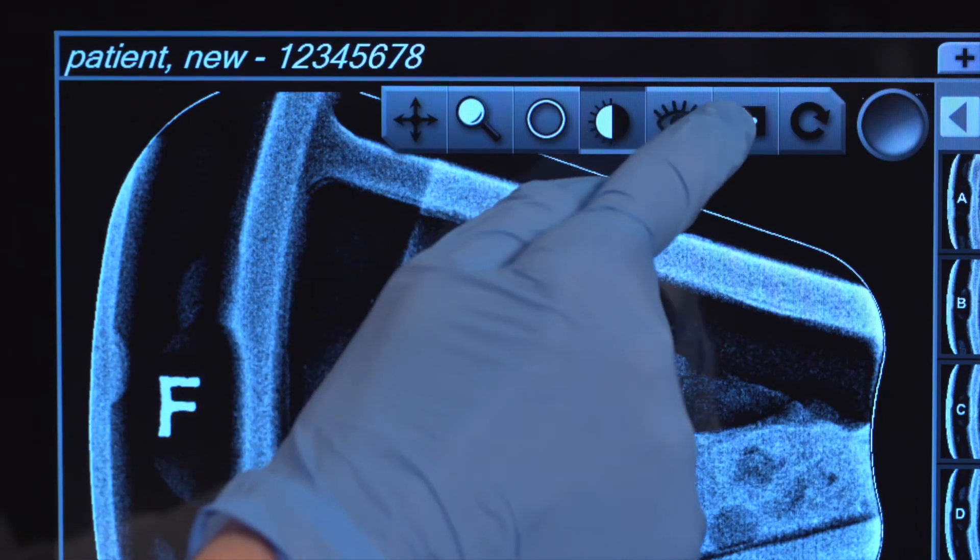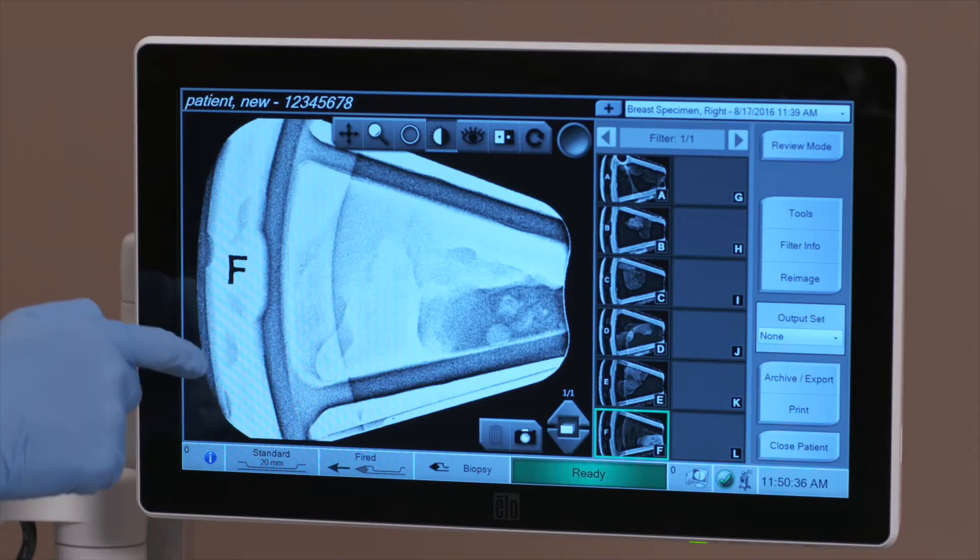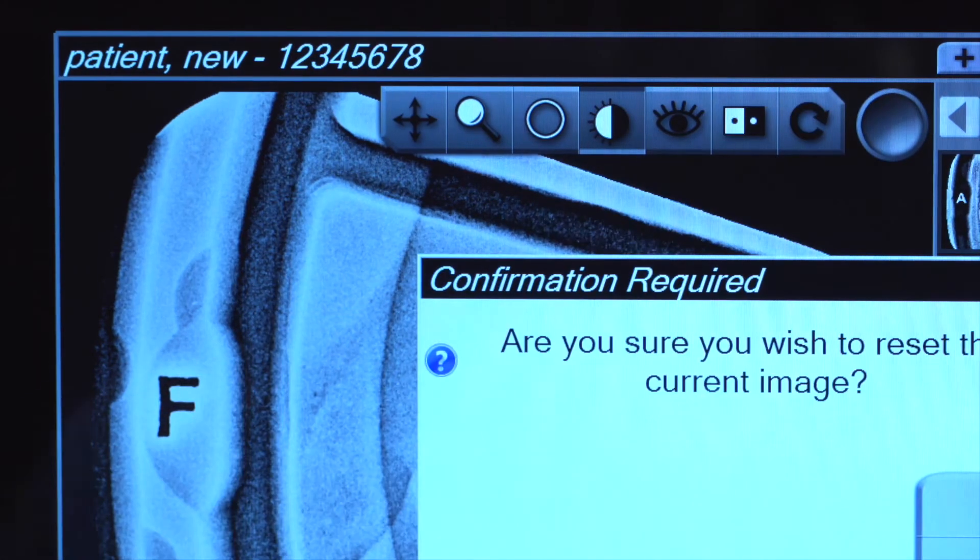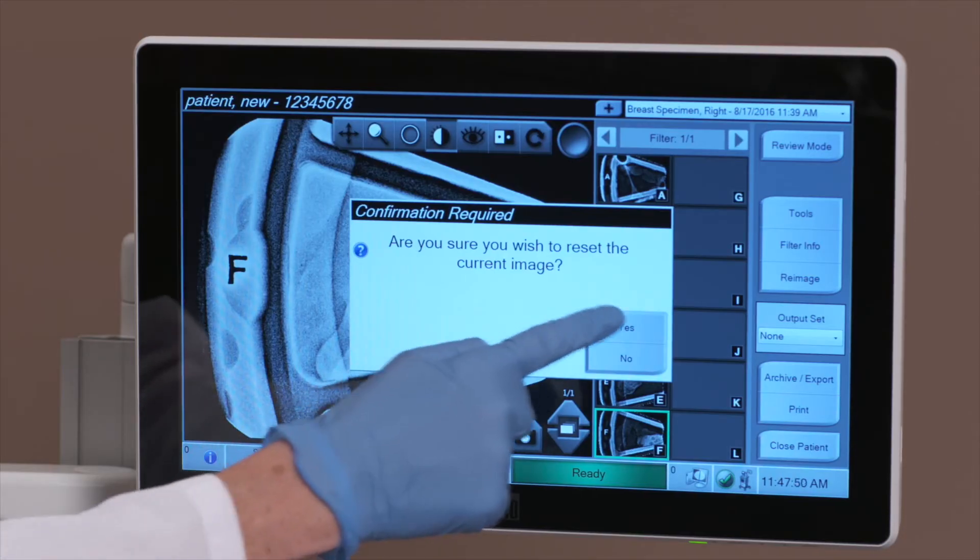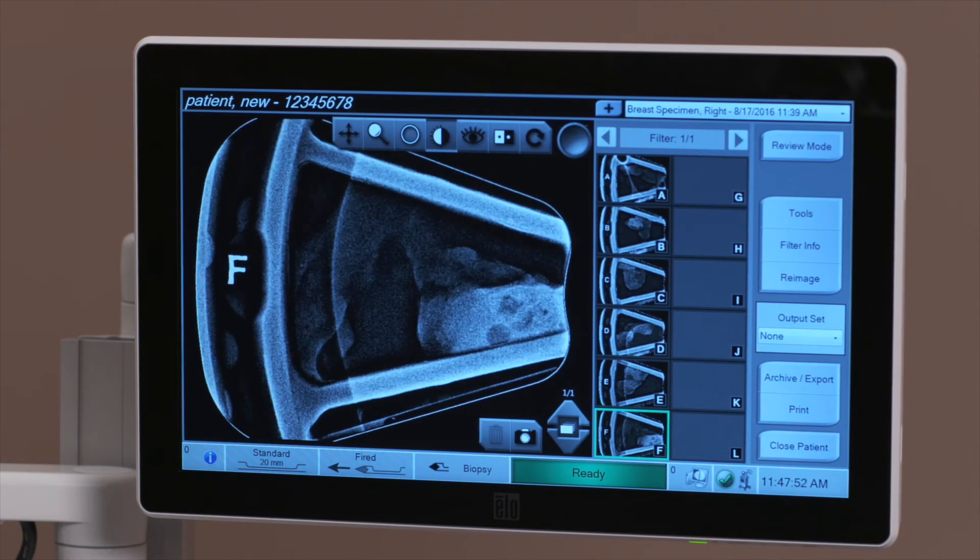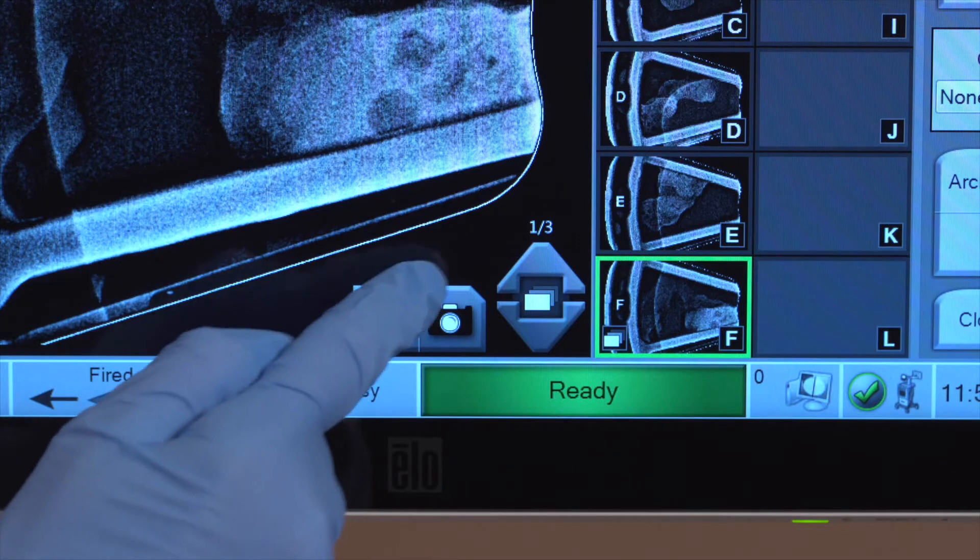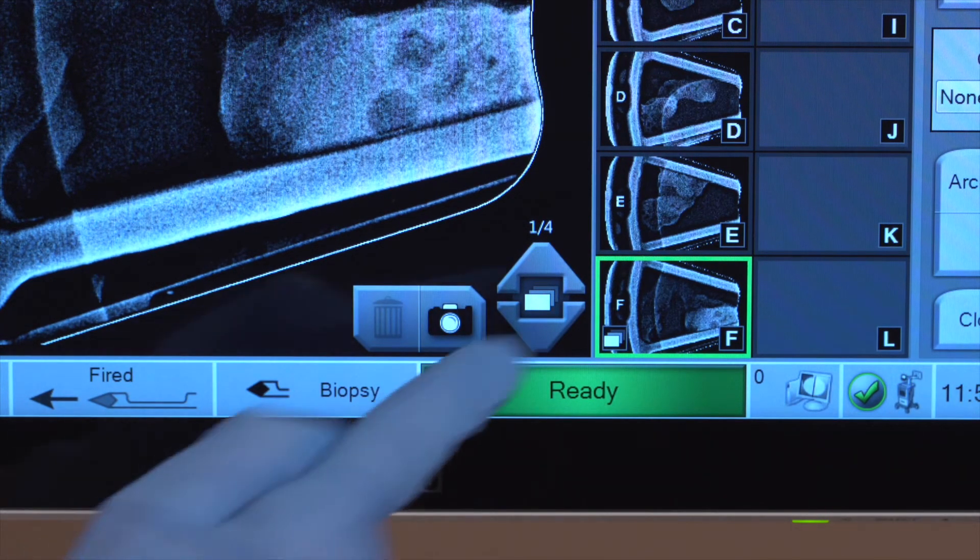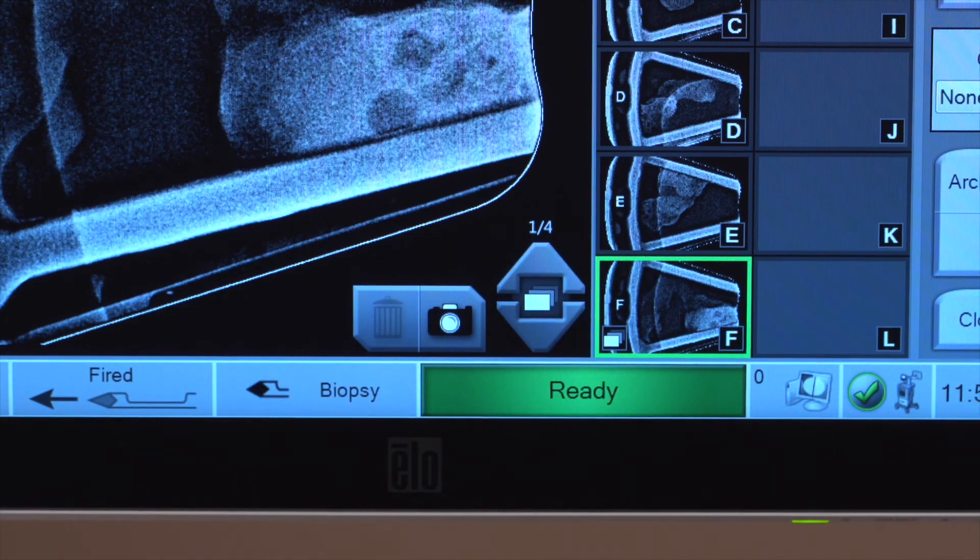The invert tool creates an inverted version of the image. The reset tool returns an image to the original state. Any annotations, panning, zooming, etc. are removed. The camera button captures a snapshot of the image display area and adds the snapshot to the current procedure.